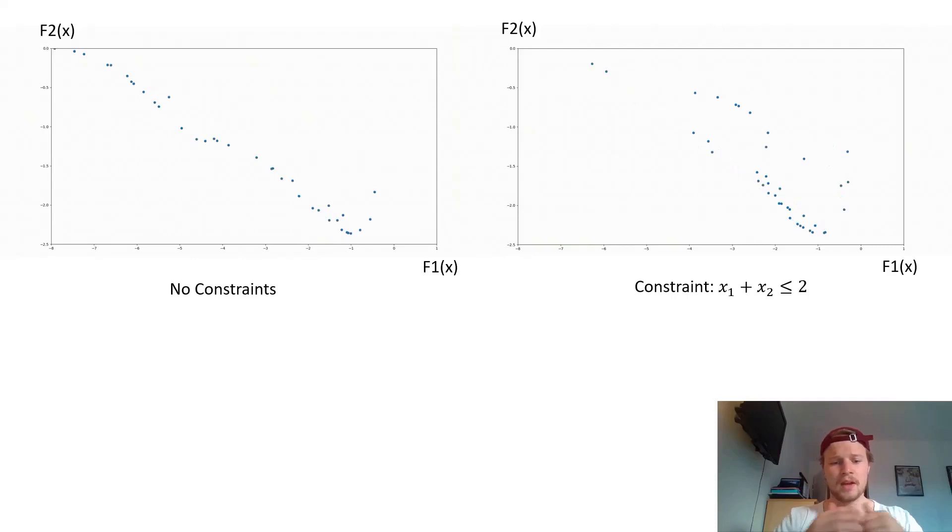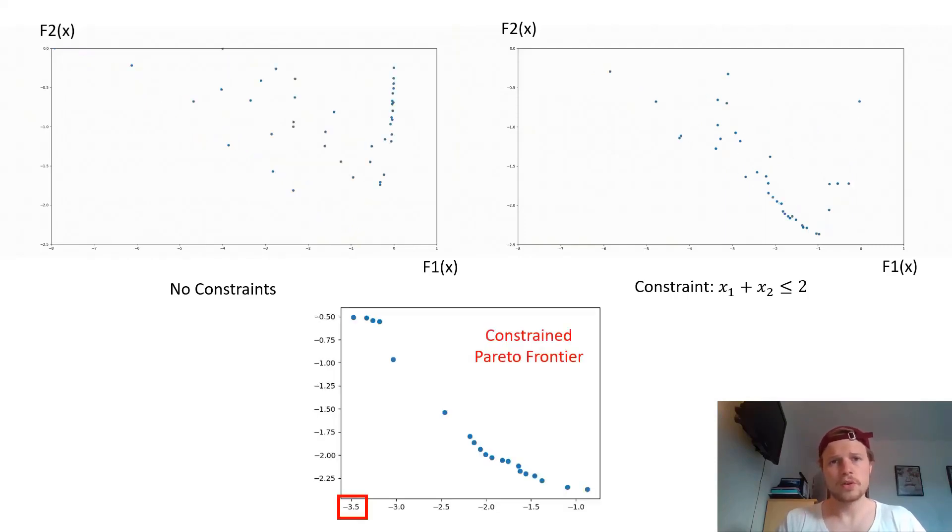And after 20 generations, the NSGA2 gives a Pareto frontier, also for the constraint problem, which looks like this. So here you can see clearly that in the Pareto frontier, the best solutions for F1 are more or less minus 3.5 and not like the unconstrained problem, like you can see in the animation about minus 8 in the best case.